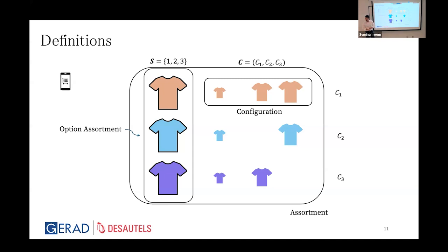Why might the configuration differ from the inventory? We may decide not to show an option in some sizes. This is for a single online retailer with a single inventory — we do have an extension for brick-and-mortar, but here we assume one inventory for one online store. So an item can be in inventory but not shown.